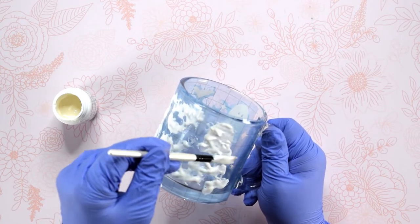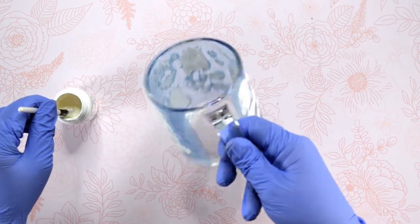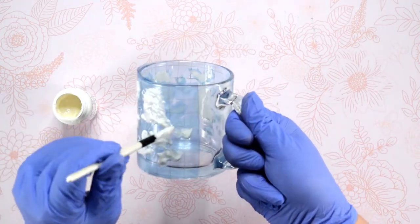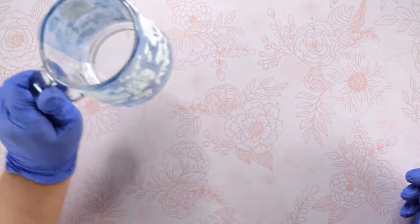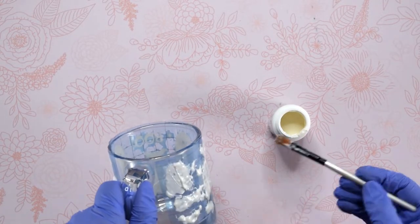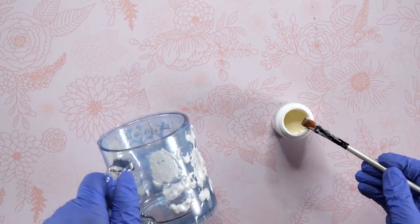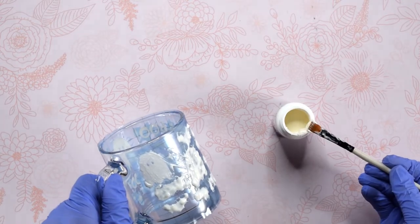The etching cream instructions say five minutes, but I have found that 15 minutes does a much better job at getting the design darker. When the 15 minutes are up, we are going to use the paintbrush to wipe up the excess etching cream and put it back into the bottle for a future project. Make sure you keep your gloves on for all of this.